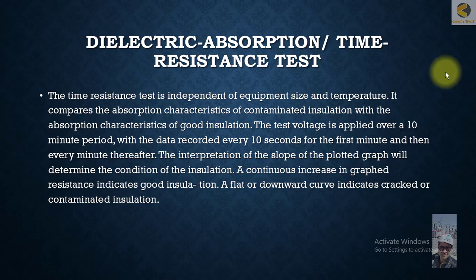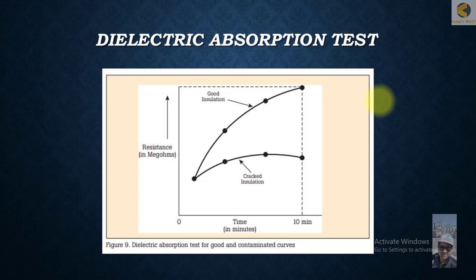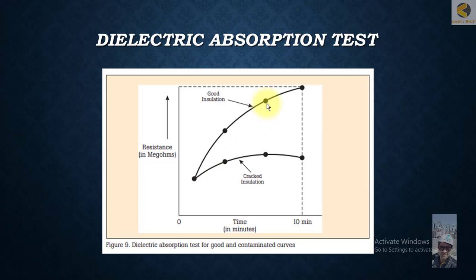Here you can see the graph of good insulation — with applied voltage, the insulation resistance keeps increasing, which is the dielectric absorption characteristic. For cracked insulation, the resistance remains relatively constant. This is one of the tests done in maintenance testing to assess the health of insulation.